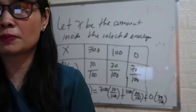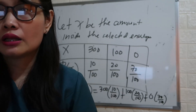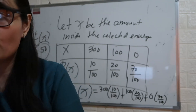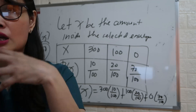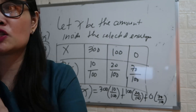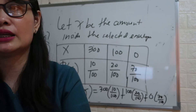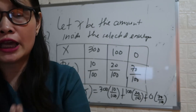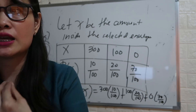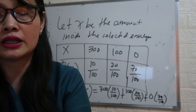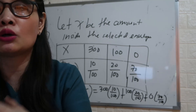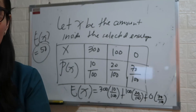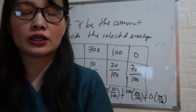Again, when we say expected value, the mean or expected value of a discrete random variable is the weighted mean of the values of a random variable x, where its probabilities are the weights. In short, in games of chance, the game is considered fair if the participant can even out the winnings and the losses. That is expected values of discrete random variables.